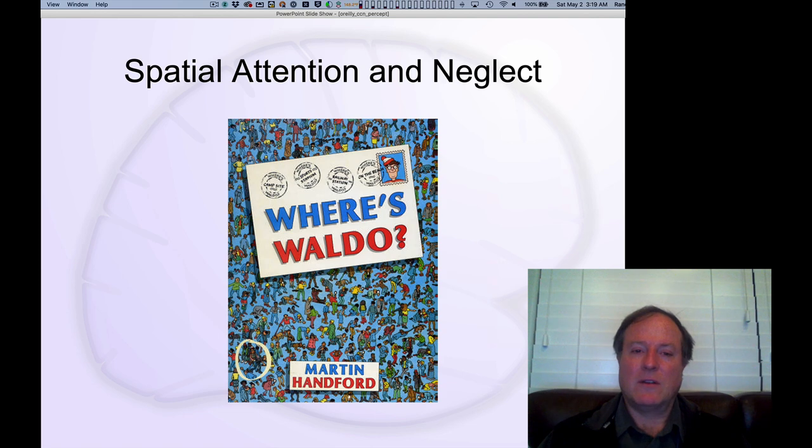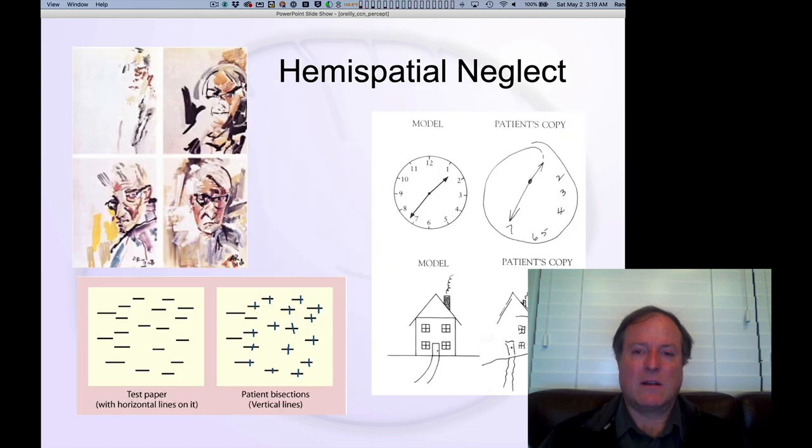The other phenomenon we're going to look at is this very surprisingly common phenomenon that happens with strokes. It emerges just because there's a particular artery that happens to be in a particular location that is commonly affected with strokes.